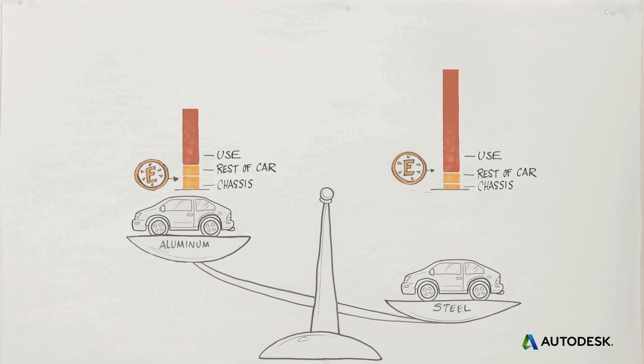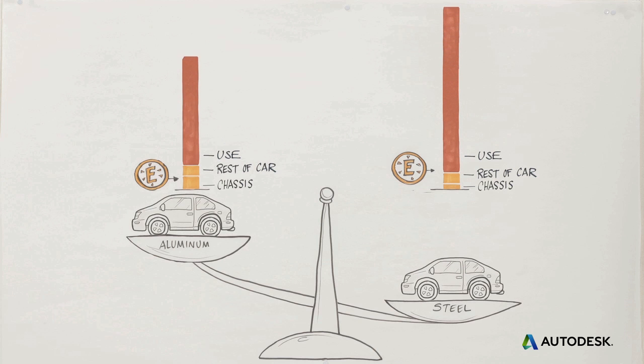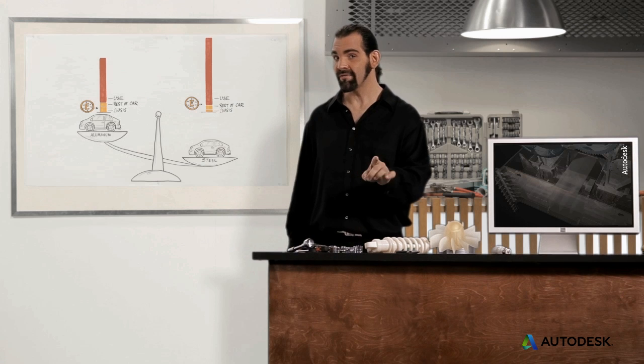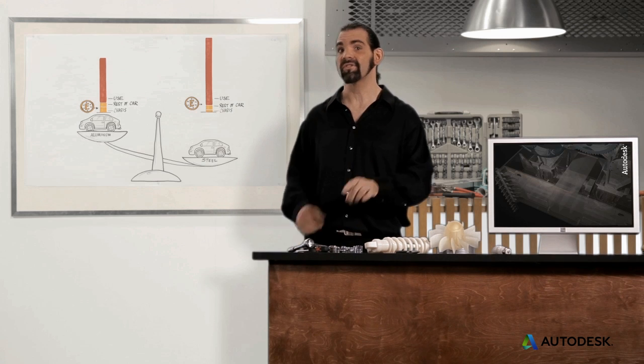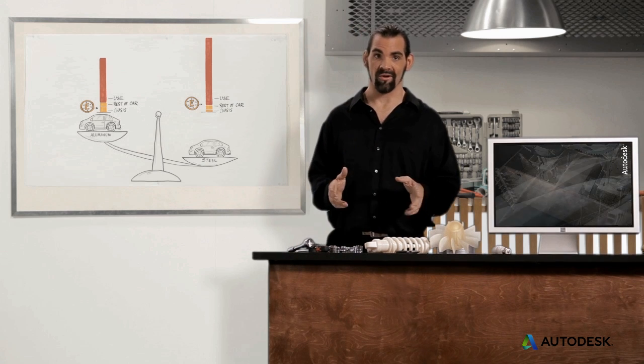Since a car with an aluminum chassis can weigh 40% less, it can use about 35% less energy over its life, making its total lifetime energy use much lower.